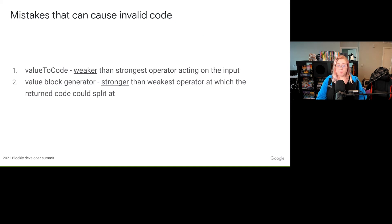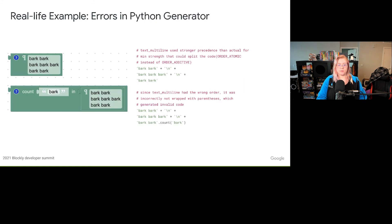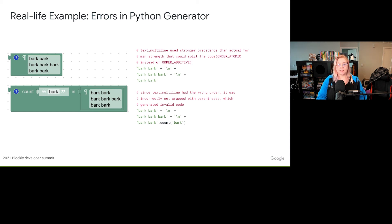Mistakes in order that can cause not enough parentheses are passing in a weaker-than-necessary operator acting on the input, or returning a stronger-than-necessary operator at which the return code could split. These are mistakes you want to avoid because they could cause the resulting code to evaluate incorrectly or cause syntax errors. Here is an example of another now-fixed issue where the incorrect order caused invalid code. The text multiline block used order atomic when it should have returned order additive, which prevented it from being wrapped in parentheses when passed as an input in the text count block.